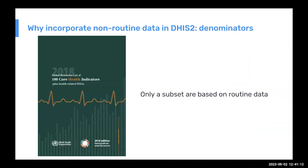Looking at the WHO global reference list of health indicators — the 100 most important health indicators identified by WHO and partners, including SDGs that are health-related — a very small subset of those are actually from routine systems. A lot is only available through surveys. So if you want to use DHIS2 as an analysis platform with all your key health indicators, you would need to bring in not only denominator data but also survey results.